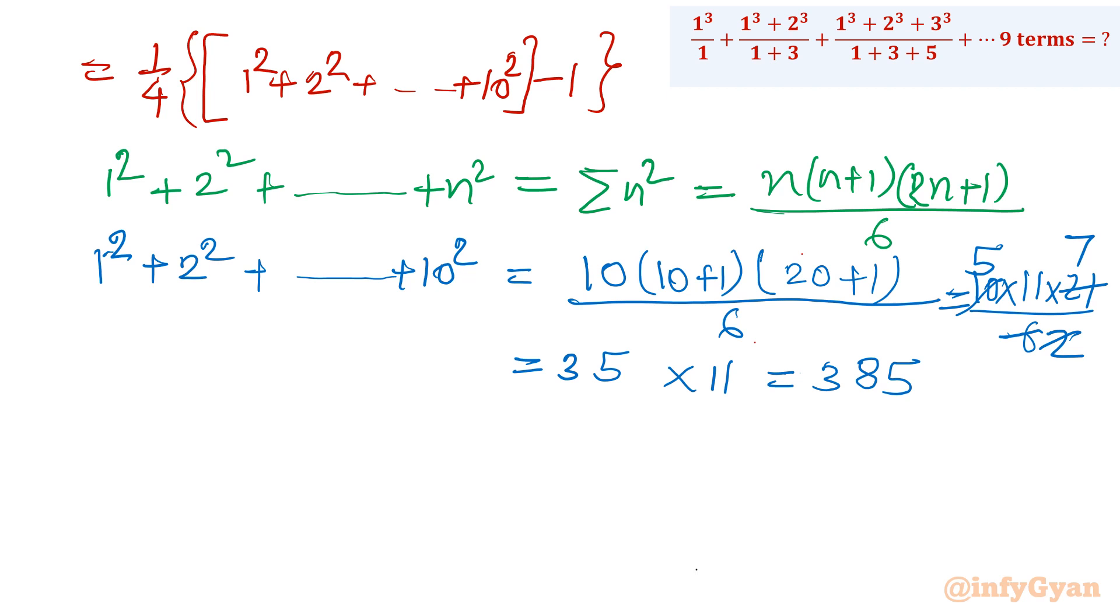So let us simplify our final result. 1 over 4, here we will write 385 minus 1. This value is 385 minus 1. So 1 over 4 times 384. Now I will cancel this, I will be getting 96.